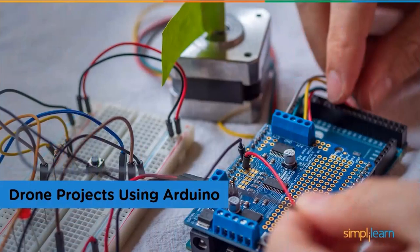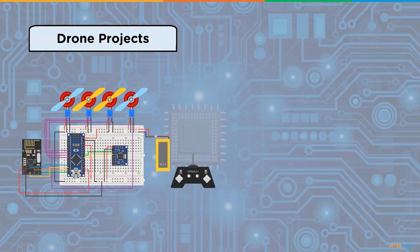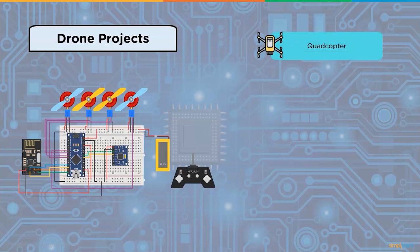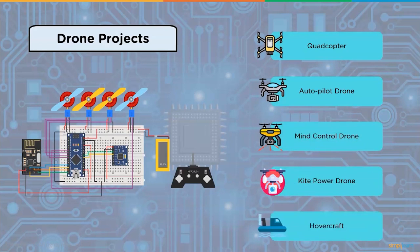Drone projects using Arduino: drones are airborne vehicles ranging from micro to multi-rotor quadcopters, sometimes including a camera for bird's-eye perspective. A drone's most significant component is the flight controller, which acts as its brain. The Arduino development board is great for this purpose, with models ranging from Arduino Nano to Arduino Mega. Projects include quadcopter, autopilot drone, mind control drone, guide power drone, and hovercraft.